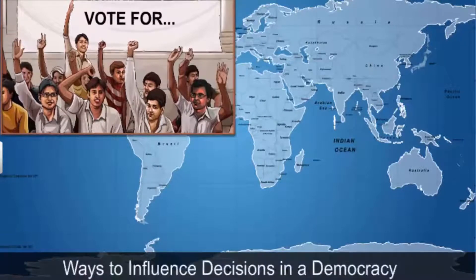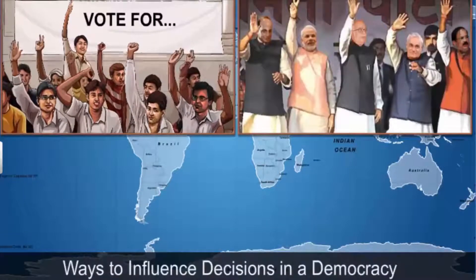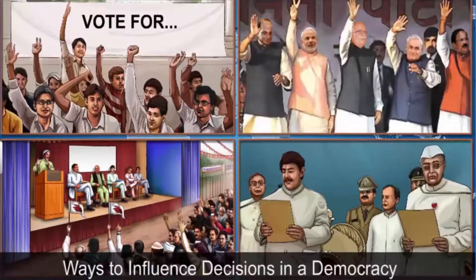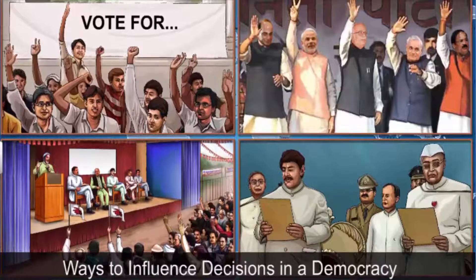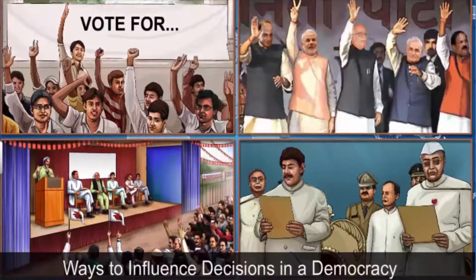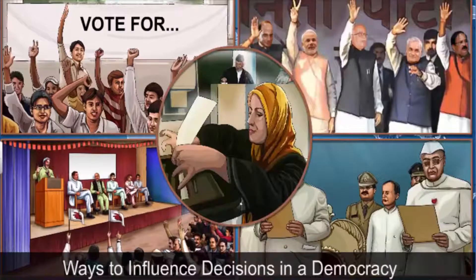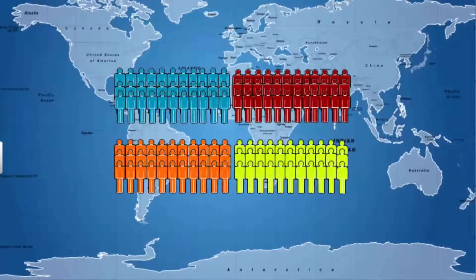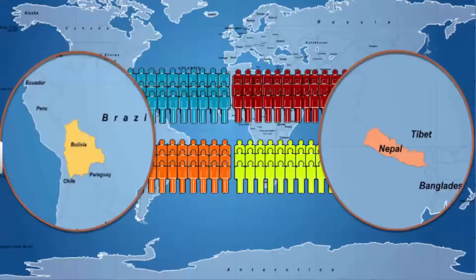Another way of influencing decisions in a democracy is by participating in politics — creating parties, contesting elections, and forming governments. The rest of the populace can do so at a very broad level by voting. However, there are indirect ways in which people can get governments to hear their demands or points of view. They could do so by forming an organization and mobilizing people with common interest, as they did in Nepal and Bolivia.